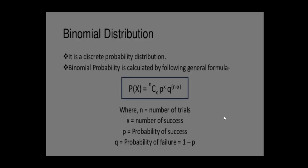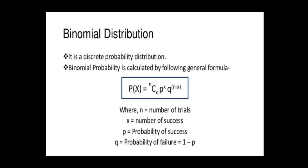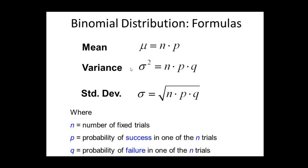Let's take a quick look at the formulas of binomial distribution and then we will see the graph. The formula for binomial distribution is P(x) = nCx * p^x * q^(n-x), where n is the number of trials, x is the number of successes, p is the probability of success, and q is the probability of failure. The formulas for mean, variance, and standard deviations are shown here.